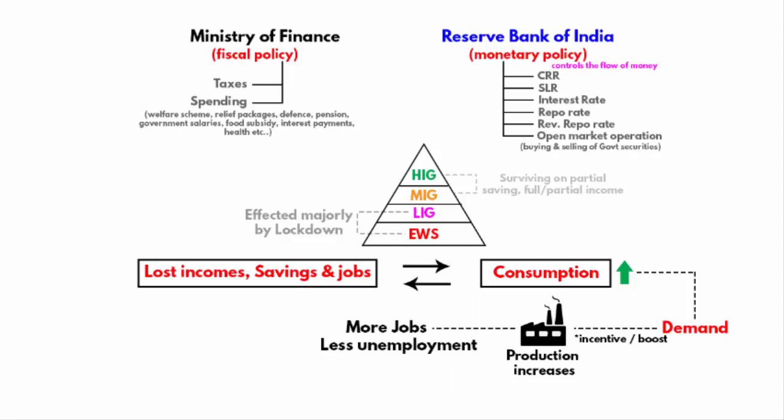My point is, it is the low income group and economically weakest section who are affected majorly by this lockdown. Although everyone is facing difficulty in their own ways, people who are at the lower end of the social strata are suffering more.